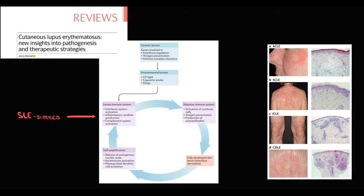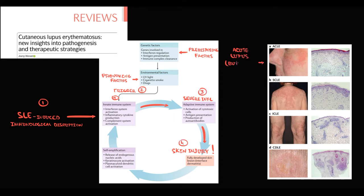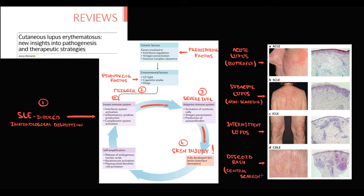On the scalp, damage to hair follicles results in non-scarring alopecia. In the oral cavity, damage to the mucosal layer manifests with oral ulcers. On skin, subacute inflammation can progress into discoid rash, while acute inflammation causes malar rash or maculopapular rash — called acute cutaneous lupus. Images show butterfly rash in acute lupus, non-scarring subacute lupus, intermittent lupus, and discoid rash. The major difference between discoid rash and subacute lupus is that discoid rash is scarring while subacute lupus is non-scarring.